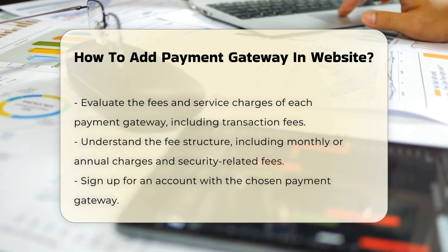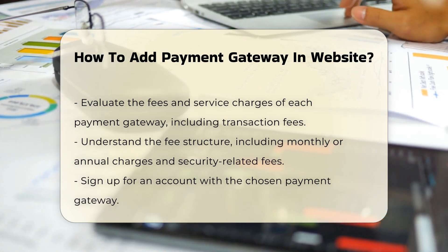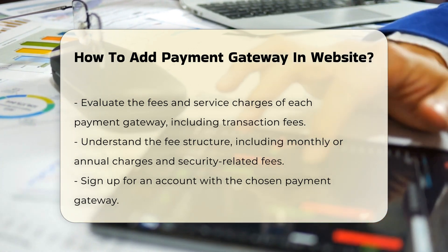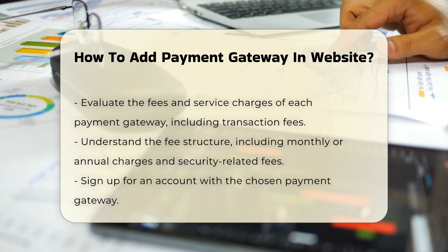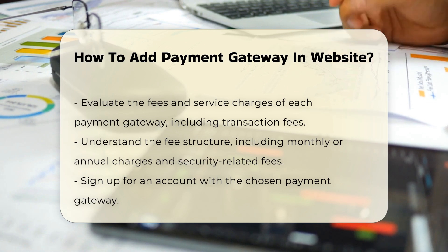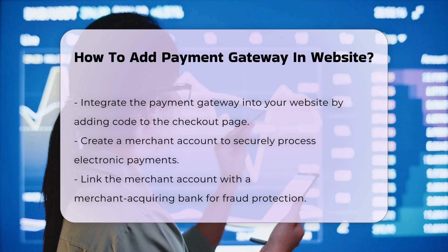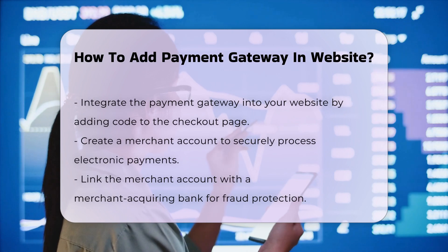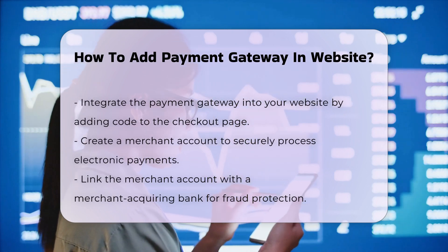Step 4: Set up your account and integrate the gateway. Sign up for an account with the chosen payment gateway and integrate it into your website. This typically involves adding a few lines of code to your website's checkout page. Tools like Service Provider Pro (SPP) can simplify this process.